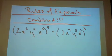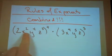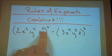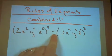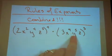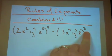Let's take some rules of exponents and combine them. 2x squared y to the 4th z cubed, all of that to the 4th power, times 3x to the 9th y to the 5th z, all of that to the 3rd power.